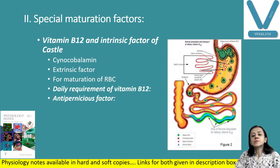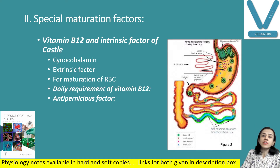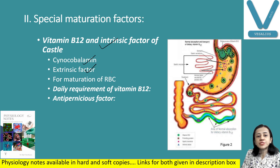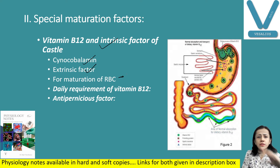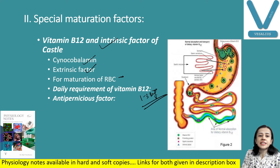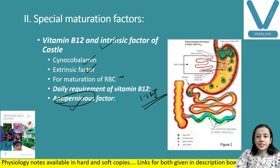Special maturation factors are vitamin B12 and intrinsic factor. Vitamin B12, also known as cyanocobalamin, is called the extrinsic factor because it binds with the intrinsic factor and is required for the maturation of RBCs. The daily requirement of vitamin B12 is very low — 1 to 3 micrograms. Its deficiency causes pernicious anemia, so vitamin B12 is known as the anti-pernicious factor.